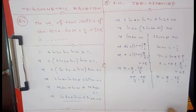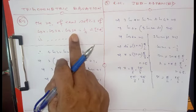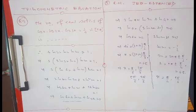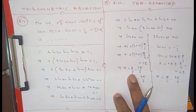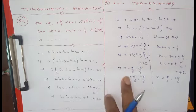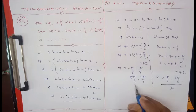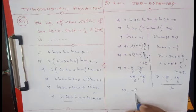Now checking solutions in [0, π]: verify x = π/6 and x = 5π/6 in the original equation. Substituting x = π/6 gives cos(π/2) = 0 at some factor, making the left side 0 ≠ 1, so x = π/6 and x = 5π/6 are rejected. The valid solutions are x = π/8, 3π/8, 5π/8, and 7π/8. Therefore the number of solutions is 4.